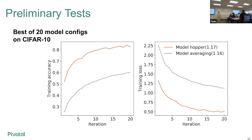A clarifying point: the 30% slower comparison — is model averaging running only one model while Model Hopper runs 20? In this example, model averaging is also running 20 models but in sequential order, training one model then the next. An audience member praised the presentation structure: first showing task parallelism's weaknesses, then data parallelism, so by the time Model Hopper is presented the audience already intuits the rotation idea.